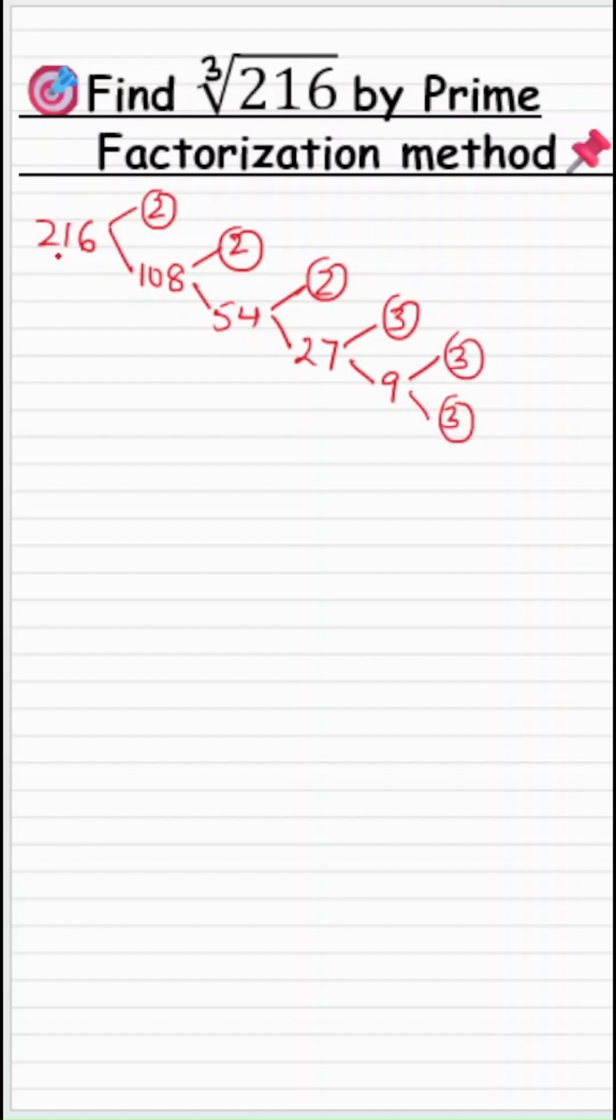So we are able to write 216 as a product of all these circled numbers which are the prime factors. So 216 equals 2 times 2 times 2 times 3 times 3 times 3. All the circled numbers over here are the prime numbers.